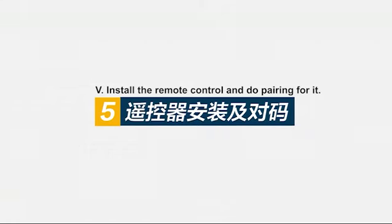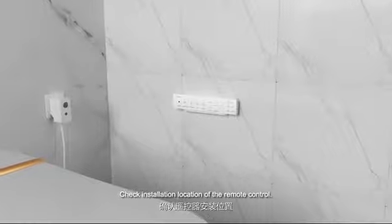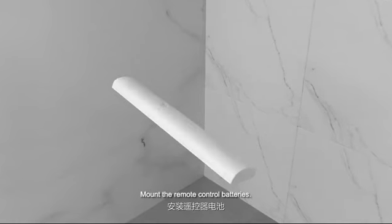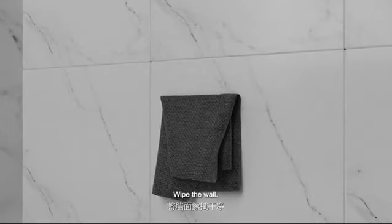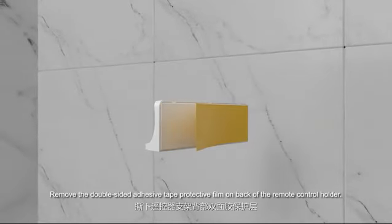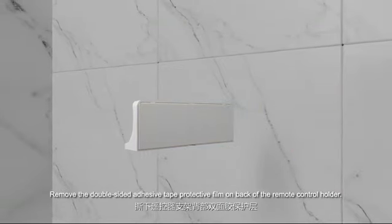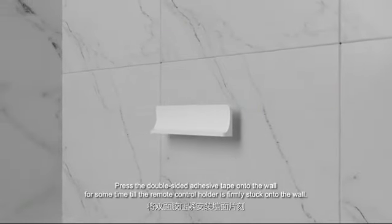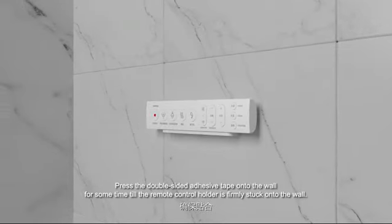Five: install the remote control and do pairing for it. Check installation location of the remote control. Mount the remote control batteries. Wipe the wall. Remove the double-sided adhesive tape protective film on back of the remote control holder. Press the double-sided adhesive tape onto the wall for some time till the remote control holder is firmly stuck onto the wall.